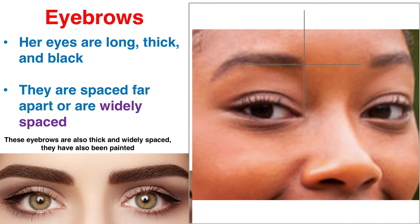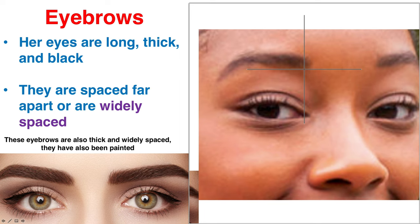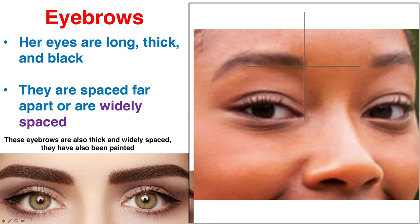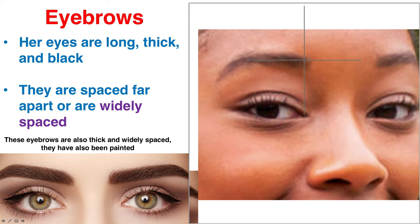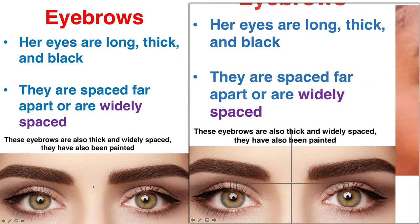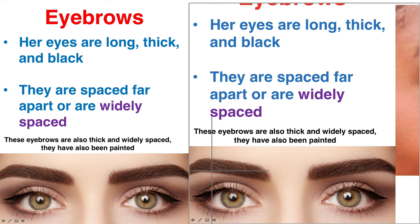Next, let's talk about her eyebrows. You can say her eyebrows are thick because there's a lot of hair there. They're also long and black — a very dark color. Another thing you could say is that they're widely spaced, meaning there's a lot of distance between her eyebrows. Comparing to another example: those eyebrows are also thick and pretty widely spaced, but even longer. Another adjective you could use is painted — she has painted eyebrows using makeup to make them look thicker.